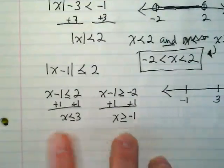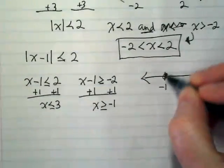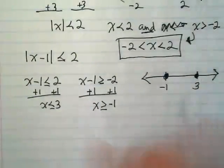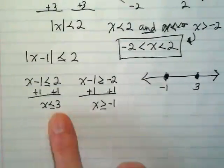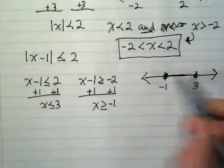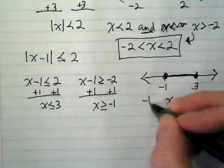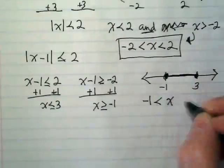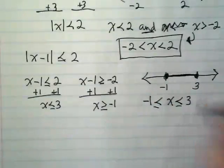They're both going to be solid circles, right? And which direction is the negative 1 going? To the right. And the negative 3, or the positive 3, is to the left. So that's telling us that this is also an 'and.' So I need to rewrite it with the negative 1 here and the 3 here.